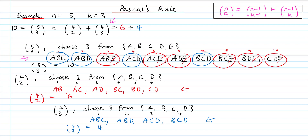To choose 3 things from A, B, C, D, E, we can either include E or not include E. If we include E, we have 2 things left to choose from A, B, C, D. If we don't include E, we must choose all 3 from A, B, C, D — giving 4 choose 3. Since each selection either contains E or it does not, by the addition principle, 5 choose 3 equals 4 choose 2 plus 4 choose 3. That gives us a concrete example of why Pascal's Rule works.